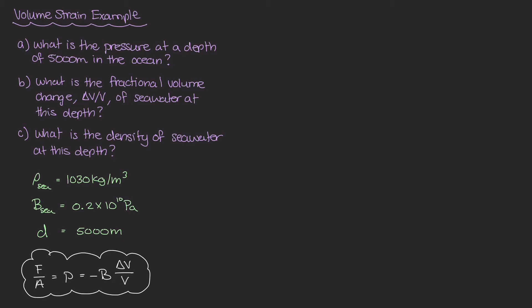Part A is what is the pressure at a depth of 5,000 meters beneath the ocean's sea level? Part B is what is the fractional volume change, in other words, this delta V over V value of seawater at that depth? And then finally, what is the density of seawater at that same depth?